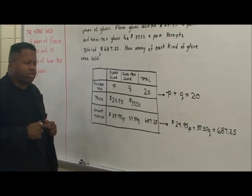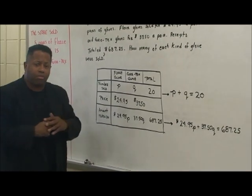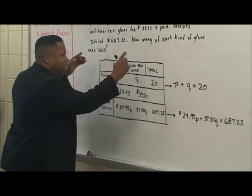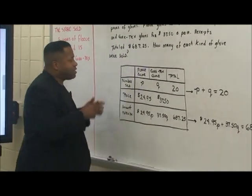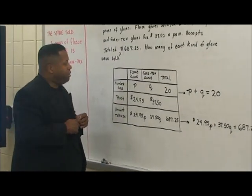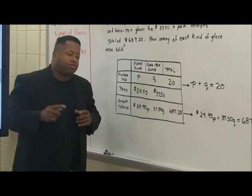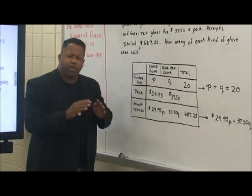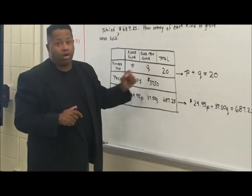So let's look at this closely. What we want to do is familiarize ourselves with the problem, but what's going to help us set up the equation is setting up a chart to help you understand much better what's given. Now fleece gloves will be represented with the variable P and Gore-Tex gloves will be represented with the variable G. So we're trying to figure out the number of each gloves being sold which was a total of 20.